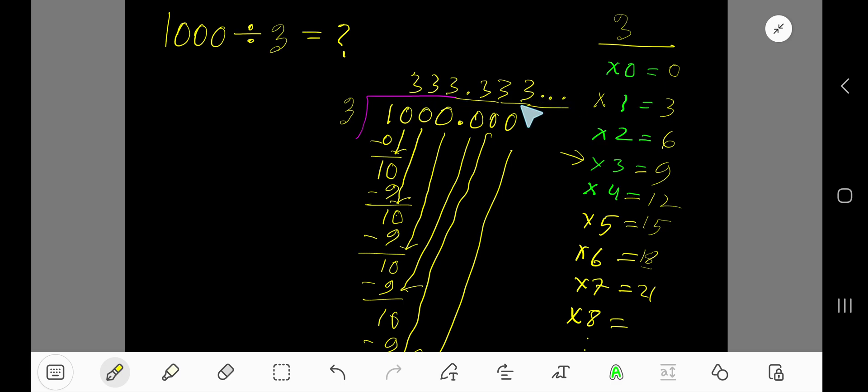So this is the answer. But since this 3 is repeating, you can place a bar over 3. This means that this 3 is repeating.